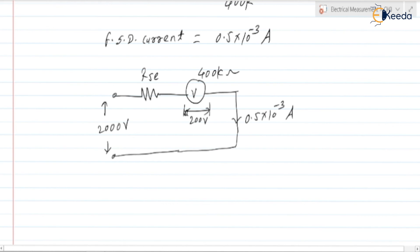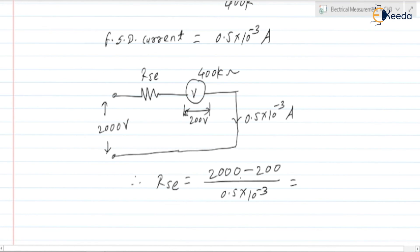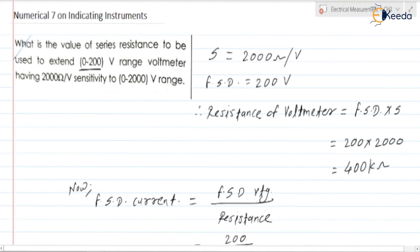Therefore, series resistance R_S = (2000 − 200) / (0.5 × 10⁻³) = 1800 / 0.5 × 10³ = 3600 × 10³ = 3.6 megaohm. This is the external series resistance required to extend the voltmeter range. This concludes numerical 7 on indicating instruments.